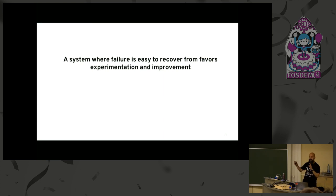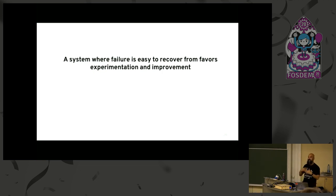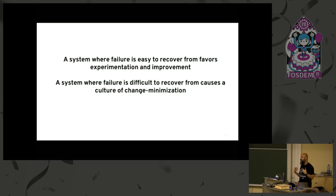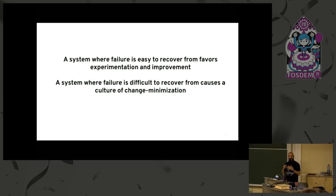Think about it as developers — how do you approach a system with a high time to recover? You approach it gingerly, with trepidation: if I bring it down, it's going to take me hours to bring it back up. Versus a system where failure is difficult to recover from — that causes a culture of change minimization. You just say, 'I'm not going to touch it.' That's where change request boards and all the bureaucracy come in because everybody's scared of failure. The people who say 'if it ain't broke, don't fix it' are the people who know that when it goes broke, it's a pain to bring back up.